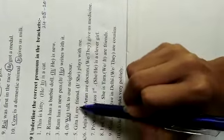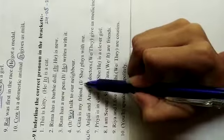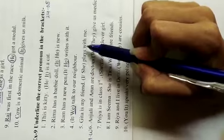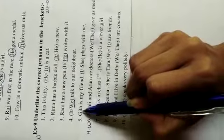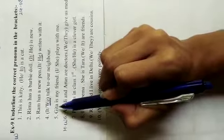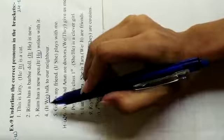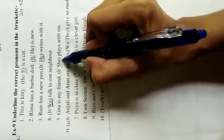Number 5. Geeta is my friend. I or she plays with me. Here we are talking about Geeta. Geeta is the name of girl. For the name of girl, which pronoun we use? We use she. So underline she.